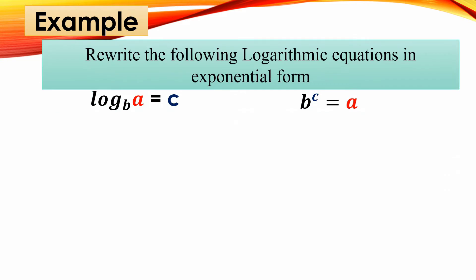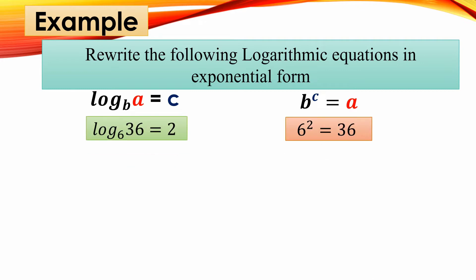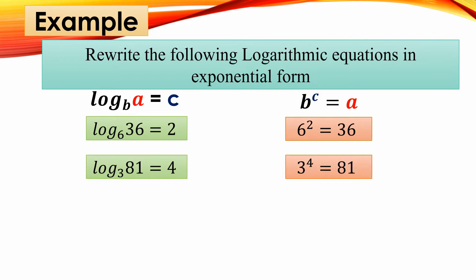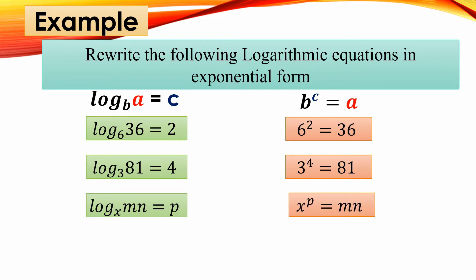How about converting from logarithmic equations into exponential form? For the first example, given log base 6 of 2 equals some value — transforming to exponential form gives us 6 raised to that exponent equals 2, and since 6 squared equals 36, the equivalent value is 36. Another one: log base 3 of 81 equals 4, so this becomes 3 raised to 4 equals 81. Then, log base x of mn equals p, so this becomes x raised to p equals mn.